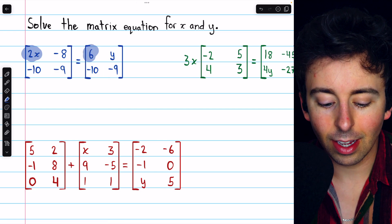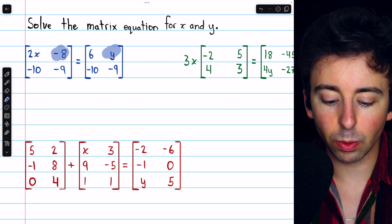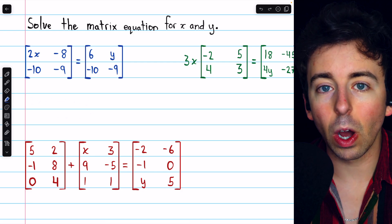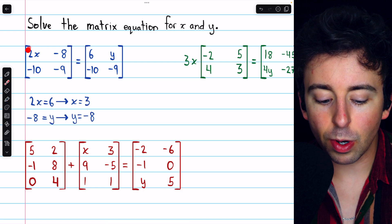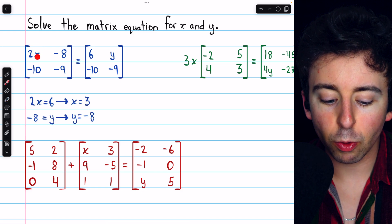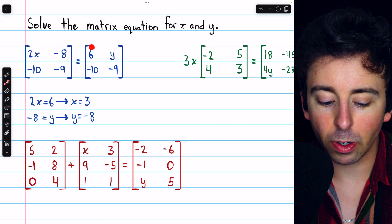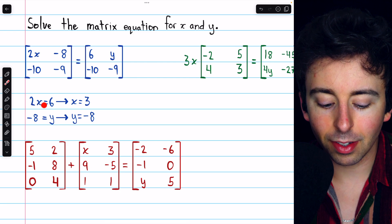2x equals 6, and then the other pair, negative 8 equals y. We get two equations that we can use to solve for x and y. It must be that the entry in row 1 column 1 of the matrix on the left equals the corresponding entry of the matrix on the right. So 2x must equal 6.